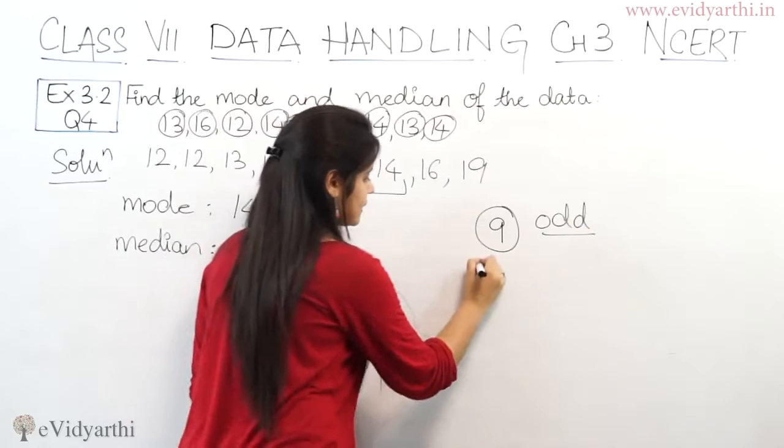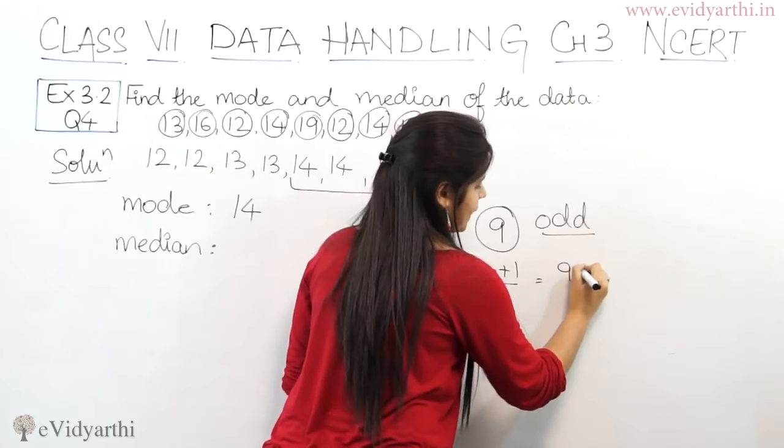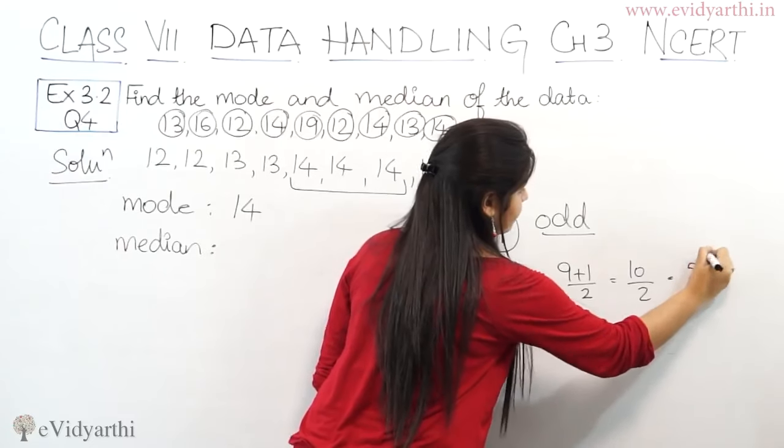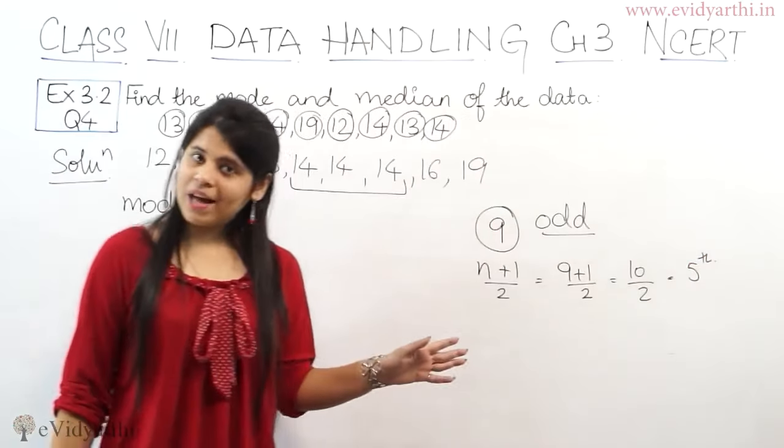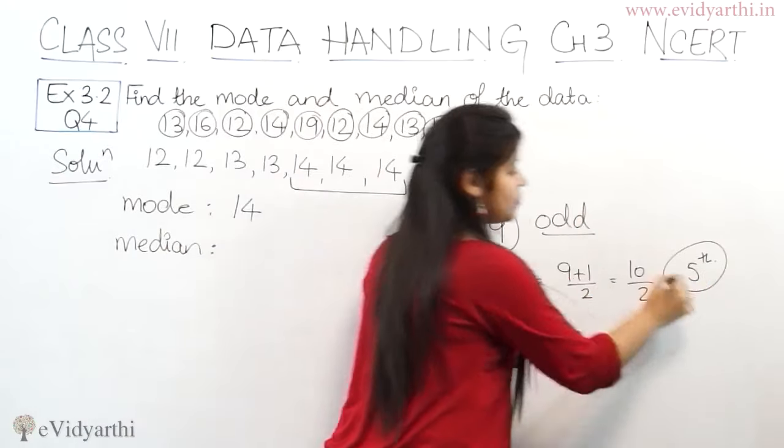So we can use the formula: N plus one upon two equals nine plus one upon two, which will be ten upon two, which will be five. Now this doesn't mean that 5 is the median.